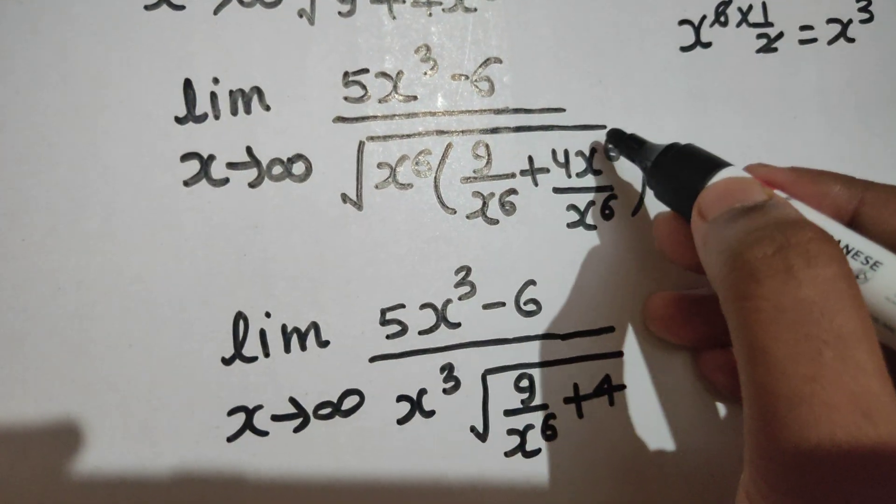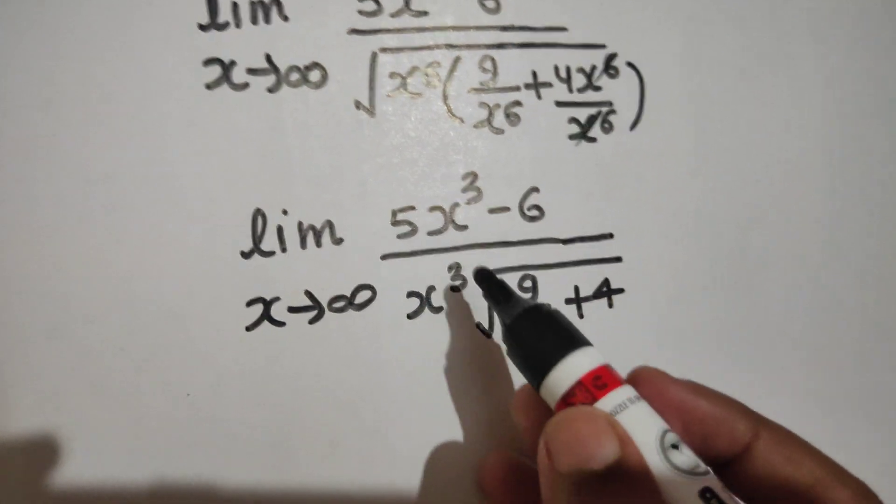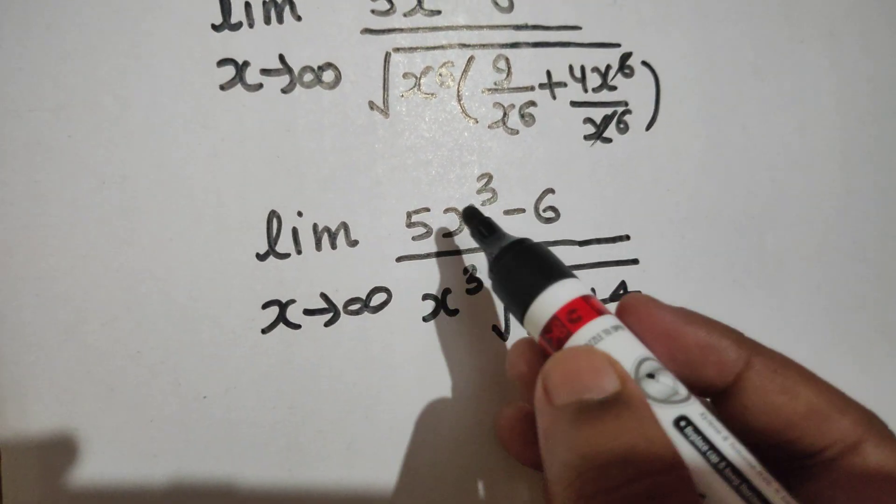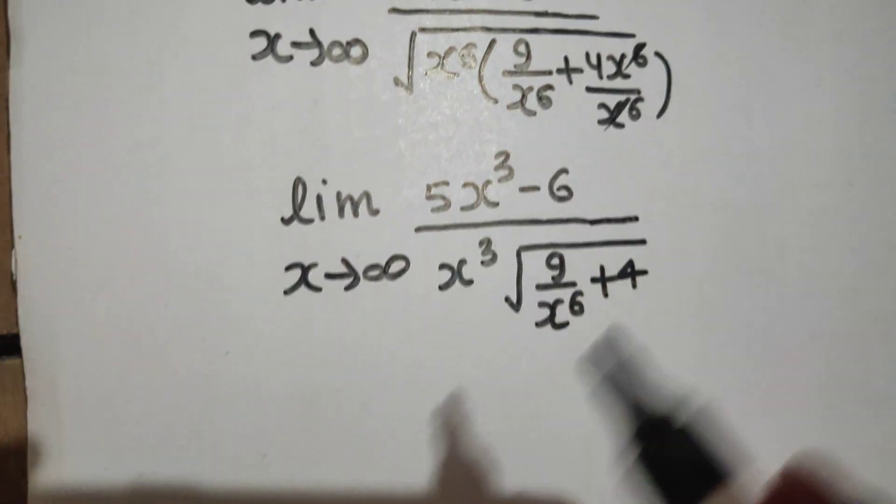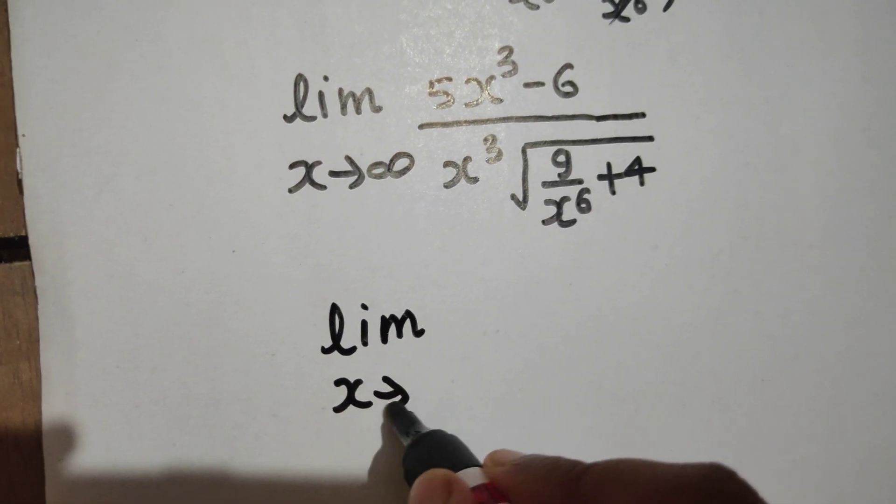I am solving each and every simple step so that there remains no confusion. So 5x³ divided by x³ minus 6 divided by x³, divided by √(9/x⁶ + 4).